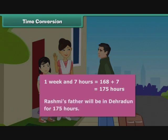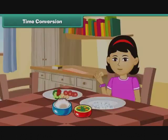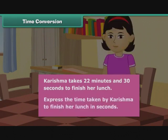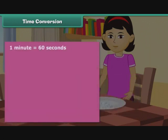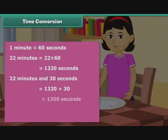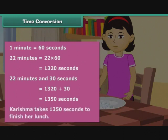Karishma takes 22 minutes and 30 seconds to finish her lunch. Express the time in seconds. 1 minute = 60 seconds; 22 minutes = 22 × 60 = 1320 seconds. 22 minutes and 30 seconds = 1320 + 30 = 1350 seconds. Karishma takes 1350 seconds to finish her lunch.